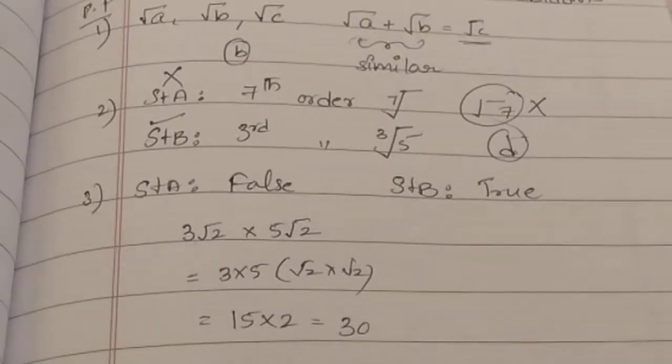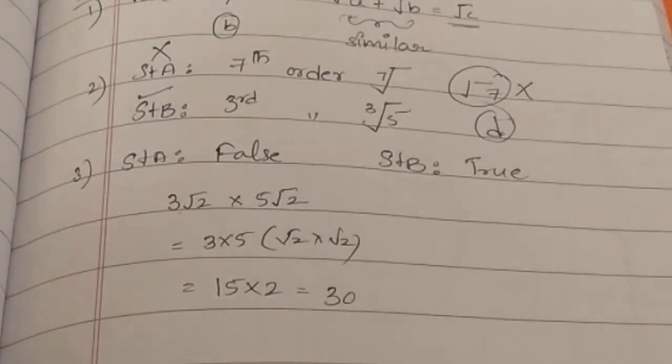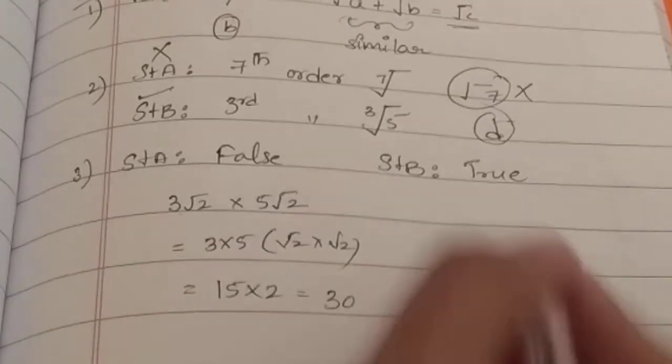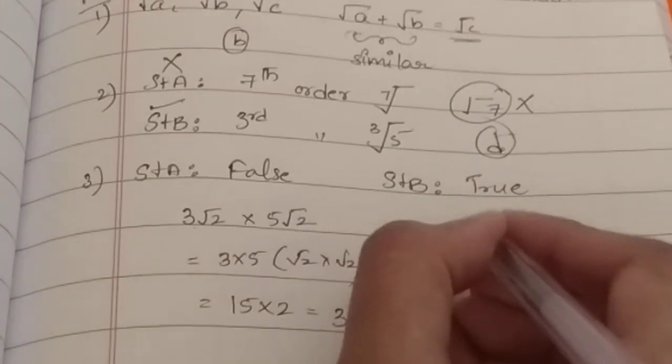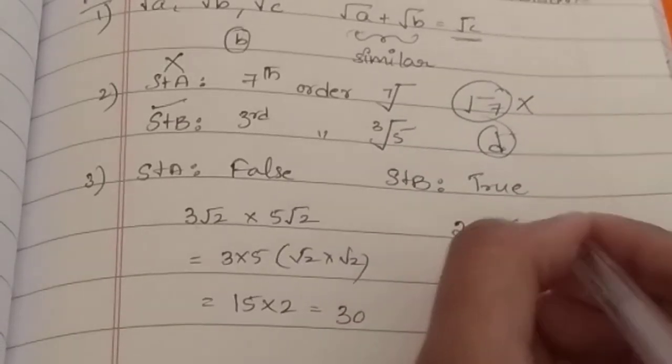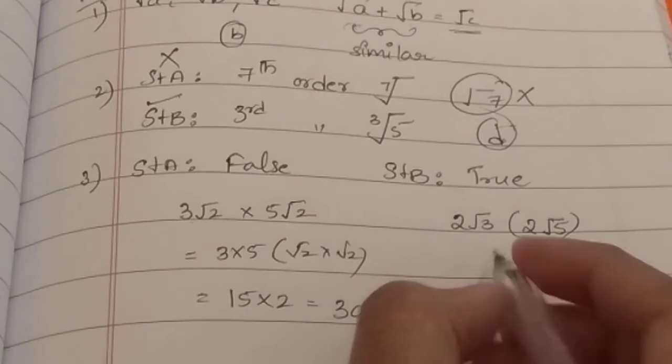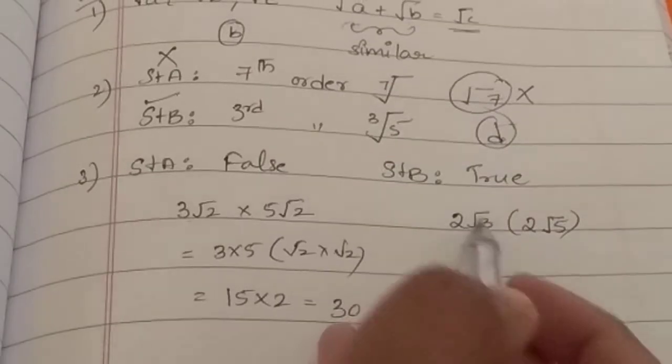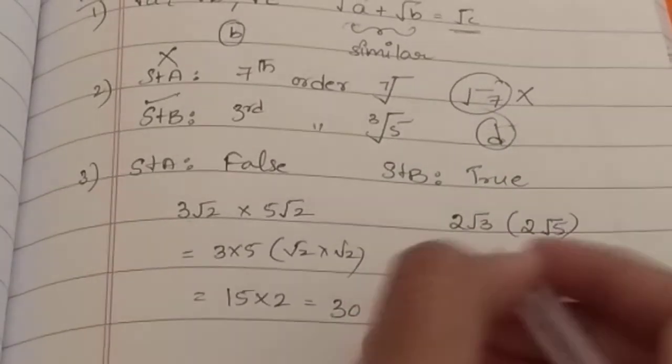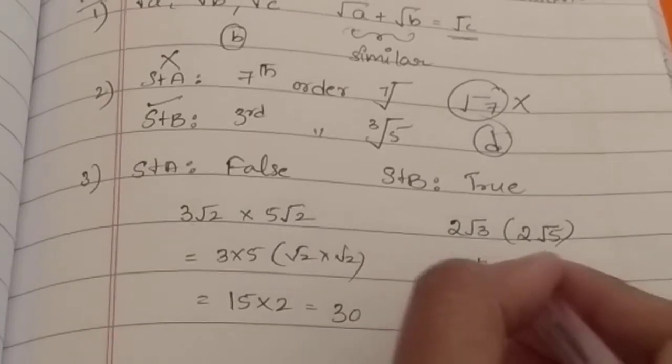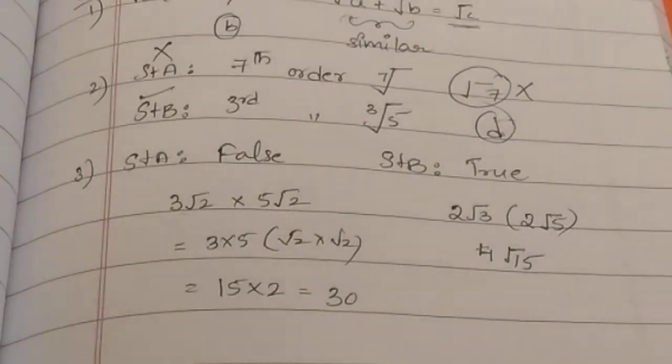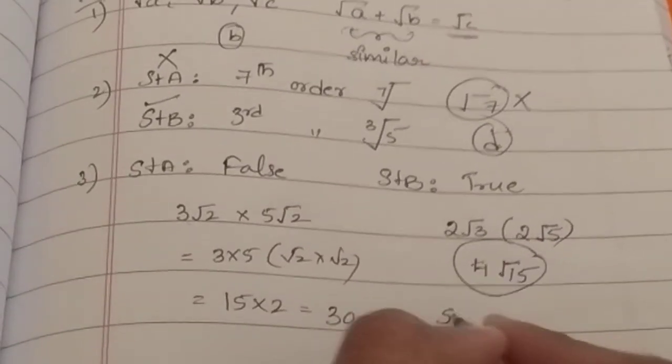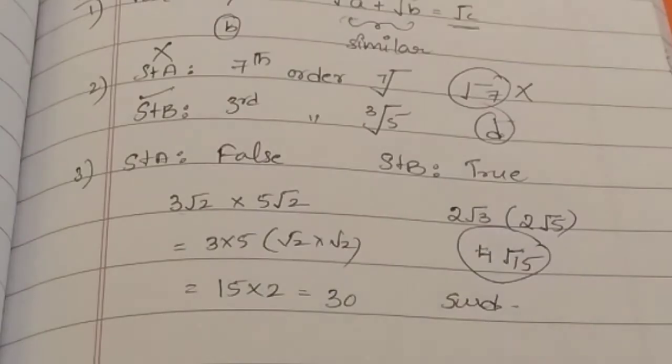Now if you want examples, I will give examples for both. For Statement A, when two similar surds, that means 3 root 2 into 5 root 2, I am going to get a rational number because 3 into 5 into root 2 into root 2. 3 into 5 is 15 and root 2 into root 2 is 2. So 15 times 2 is 30. Now 30, it is not an irrational number, it is a rational number. So that is why I could conclude that Statement A is false. Now we will look at Statement B. I am going to give the example.